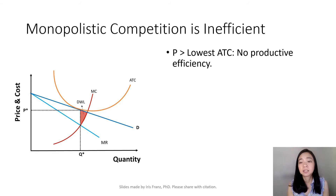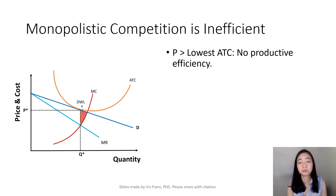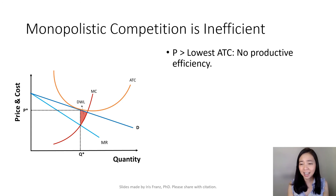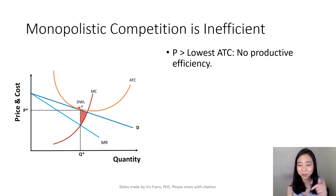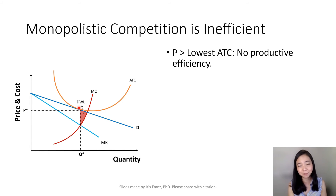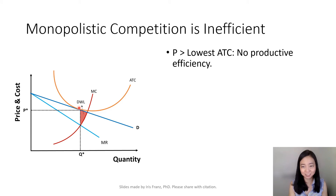First, the optimal quantity for monopolistic competition does not occur at the lowest point of average total cost. We're producing quantity Q*, and at Q*, the average total cost is still going down. Therefore, we're not producing at the lowest point of ATC. As a result, we do not have productive efficiency.